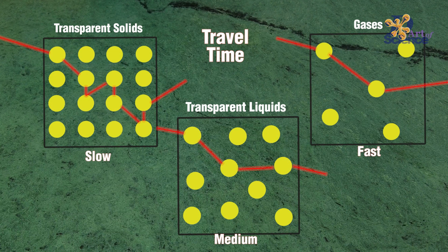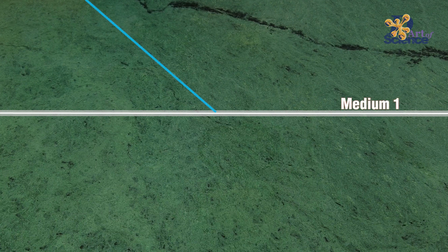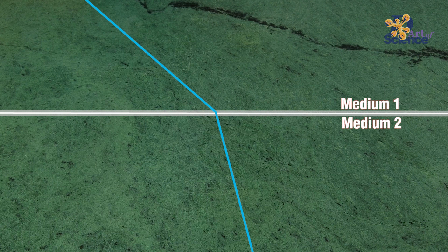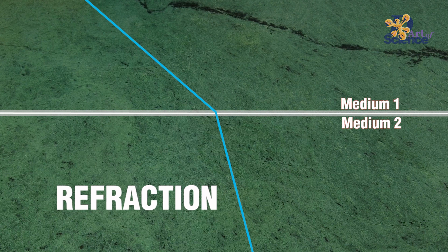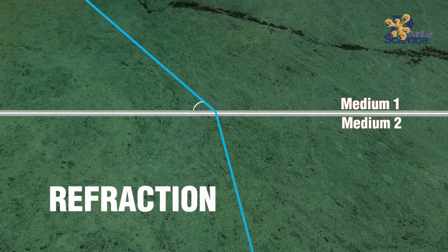Now since the travel time of light is different across different mediums, when light travels from one transparent medium to another, it bends. And this bending of light is what we call refraction. And this only happens when the light hits the medium at an angle.